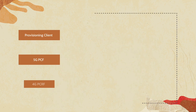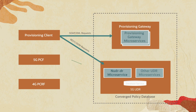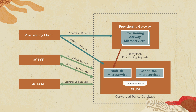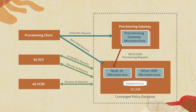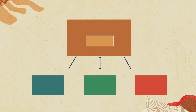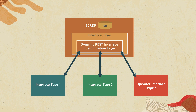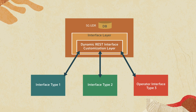UDR has evolved to provide a Converged PolicyDB solution to bring its 4G and 5G subscribers together in one common database solution. It provides SOAP-based provisioning and Diameter SH interface as part of the solution. It supports flexible schema and URI so customers can extend the interface for newer data storage as needed, without any software change — just on-the-fly configuration changes.